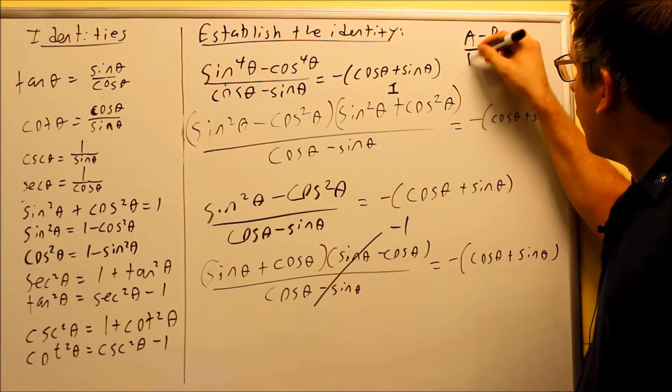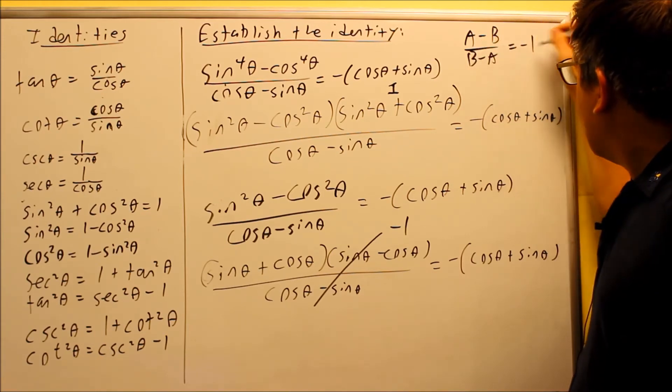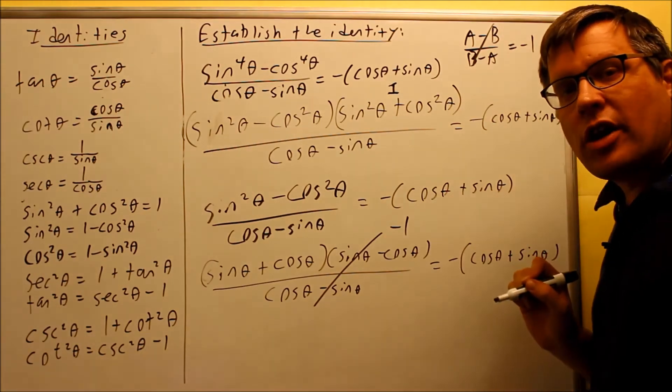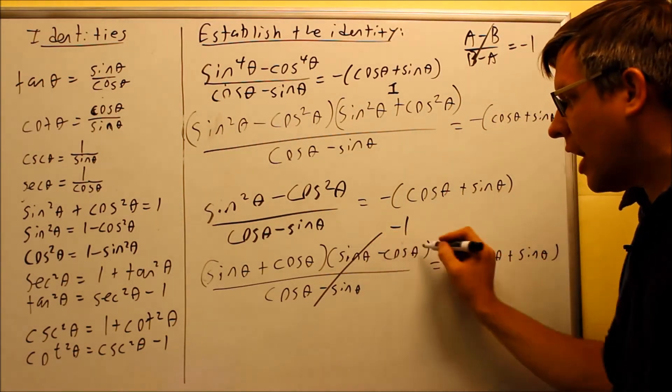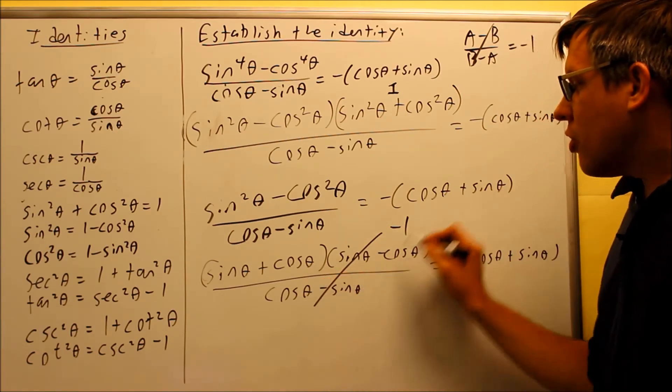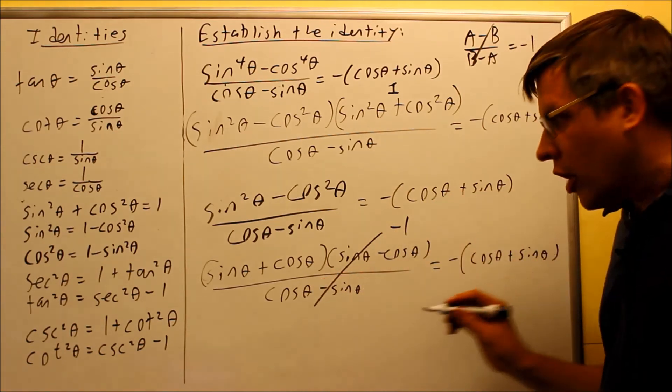The actual rule is A minus B over B minus A. That whole thing cancels out and simplifies down to negative one. So anytime you see that happening, this minus this with the same thing in order reversed, you can automatically cancel it out and put a negative one.